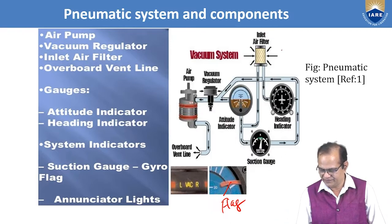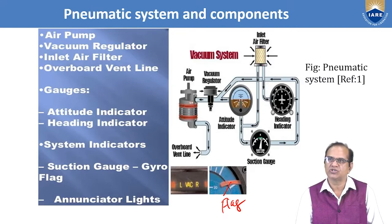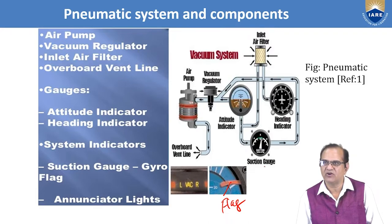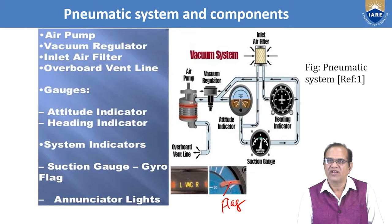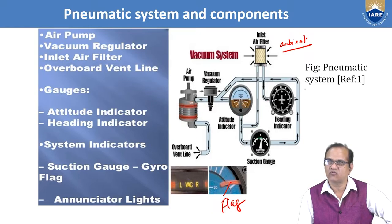From the filter, air goes to the heading indicator, then to the attitude indicator, which is also operated by this system. Then there is the suction gauge, which shows how much suction is generated. Air goes to the vacuum regulator, where it is regulated to the required amount, and then to the air pump which sucks air from ambient. Ambient air is sucked by the pump, flows through the instruments, returns to the vacuum regulator, and is exhausted back to ambient.